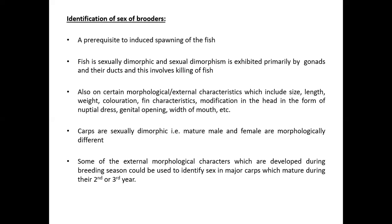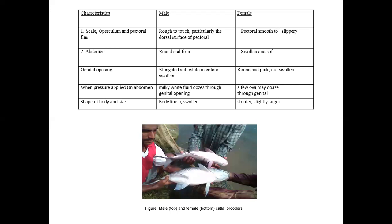Carps are also dimorphic — mature male and female are morphologically different. Some external morphological characters develop during the breeding season and can be used to identify sex in major carps, which mature during their second or third year. The abdomen in males is round and firm during the spawning season, while the female body is swollen and soft. The genital opening is elongated and slit-like in males, and round and pink in females. When pressure is applied to the abdomen, the male releases milky white fluid and the female releases a few ova. The male body is linear, while the female is slightly larger and shorter.